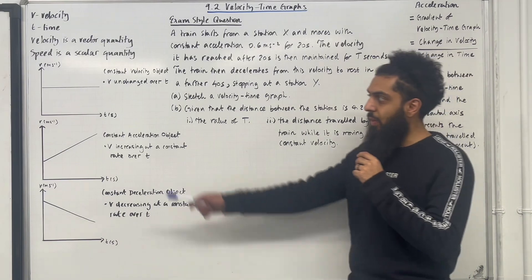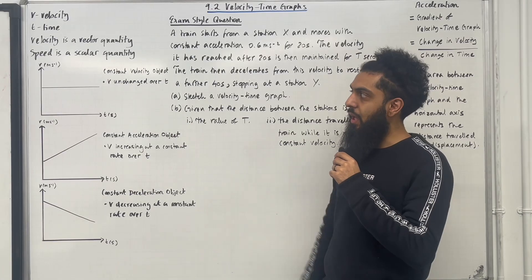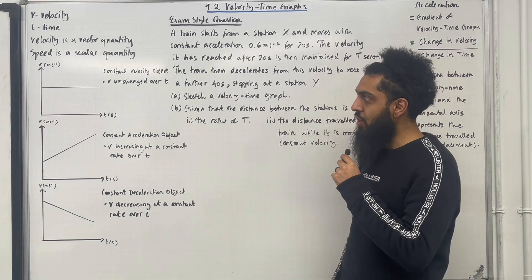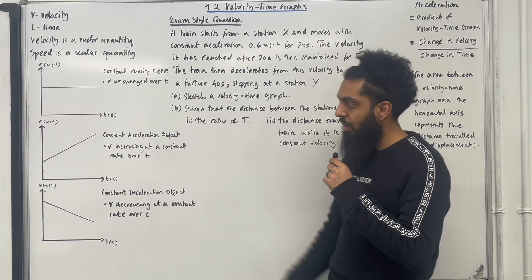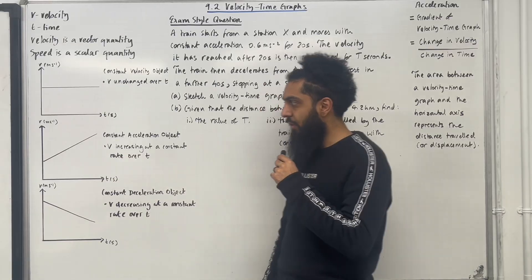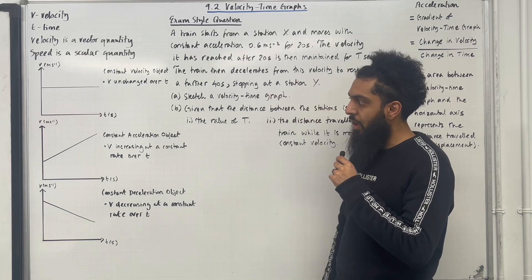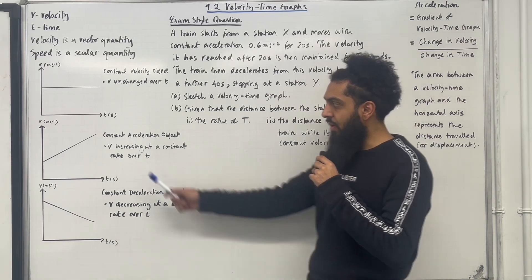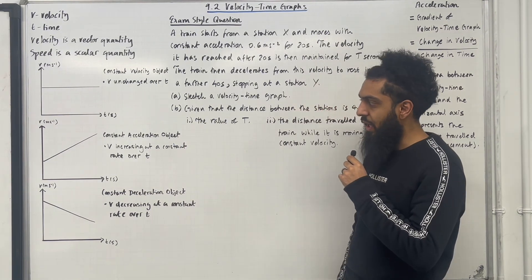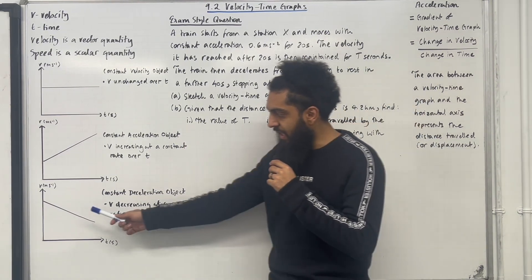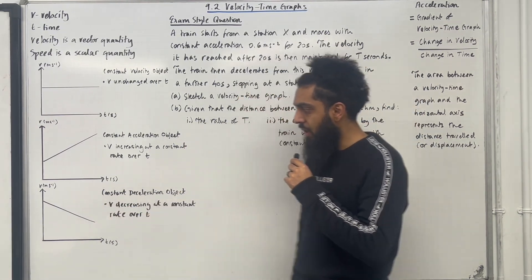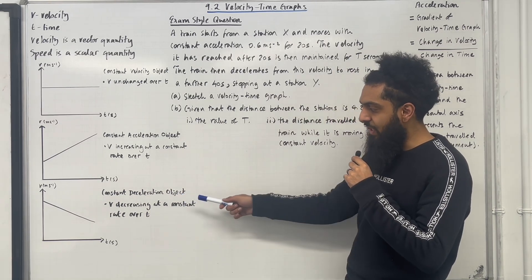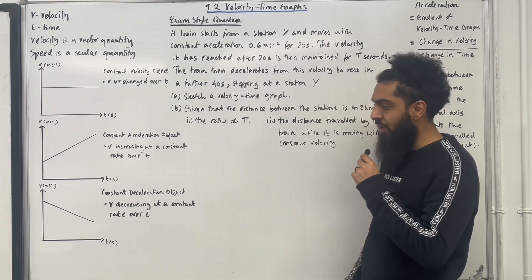Consider the following velocity-time graphs. In the first scenario, we have a constant velocity object — V is unchanged over T. In the second scenario, we have a constant acceleration object, so V is increasing at a constant rate over T. Finally, this velocity-time graph indicates a constant deceleration object — V is decreasing at a constant rate over T.